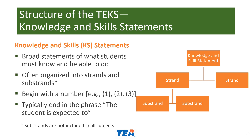Moving into the meat of the standards, we'll start with knowledge and skill statements, sometimes referred to as KS statements. These are broad statements about what students should know and be able to do. They're not very specific, and that's intentional — they serve an organizational function, grouping like sets of standards together. They're often organized into strands and sometimes sub-strands. They always begin with a number — one, two, three, etc. — and they always end in the phrase 'the student is expected to.'